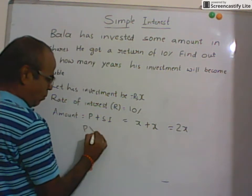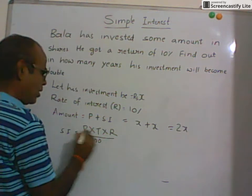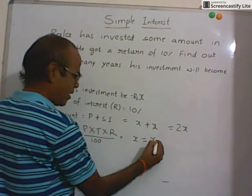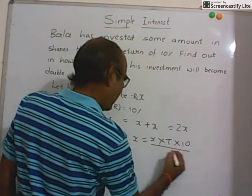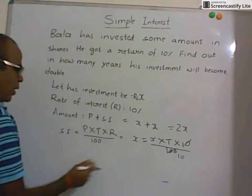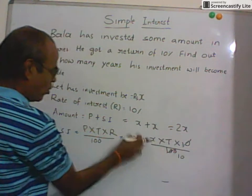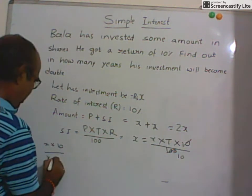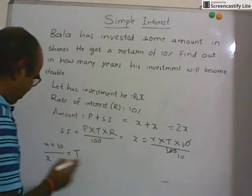Now we will use the same formula: Simple Interest equals P into T into R divided by 100. Simple interest is X, so X equals P which is also X, into T — which we don't know and have to find out — and R is 10 percent, divided by 100. This simplifies to X into 10 divided by 100, times X equals T.